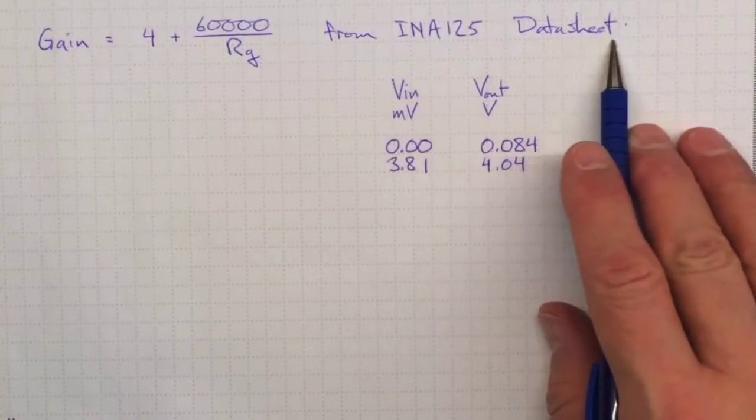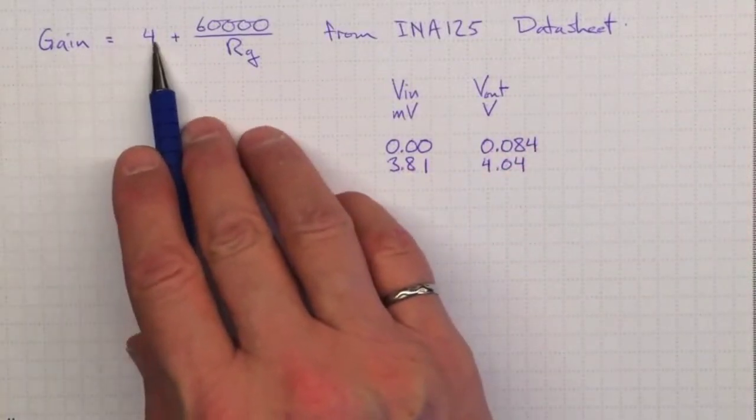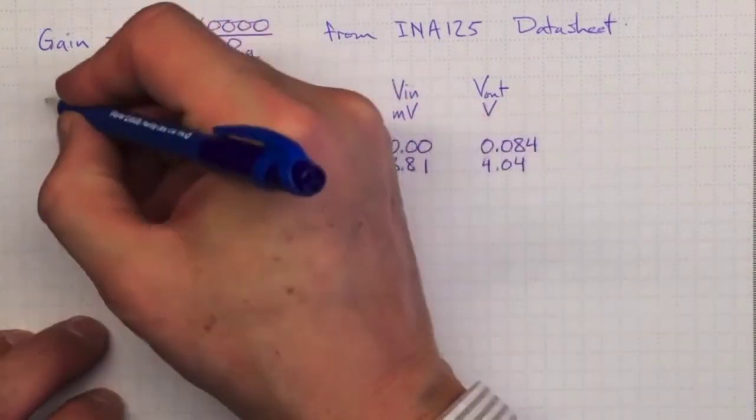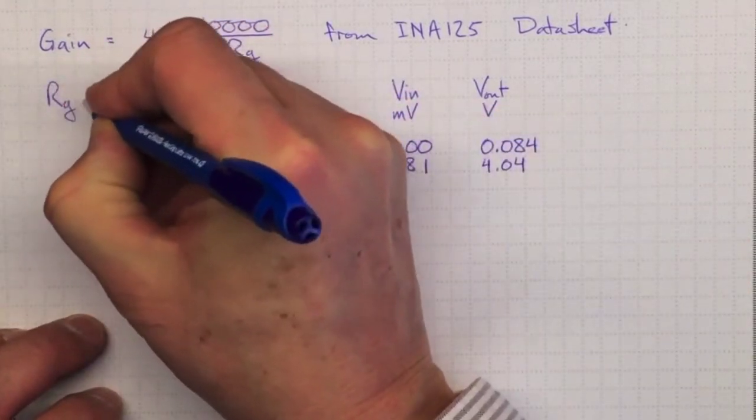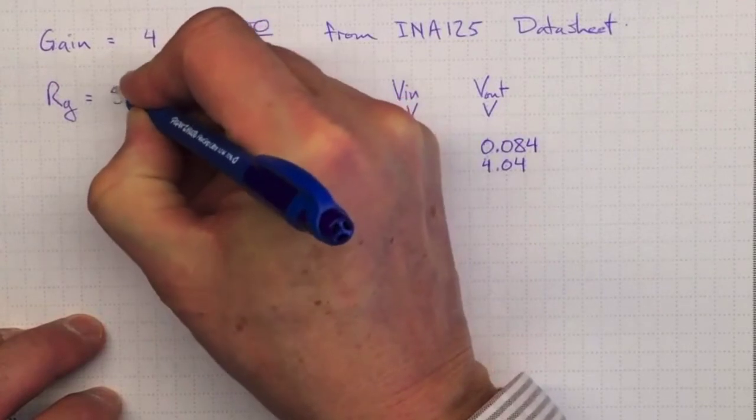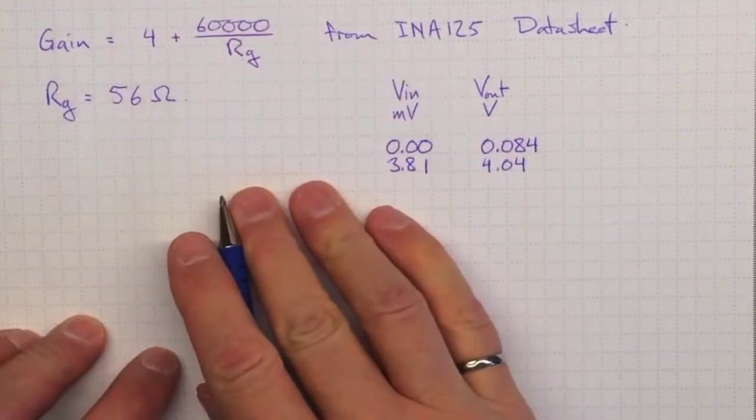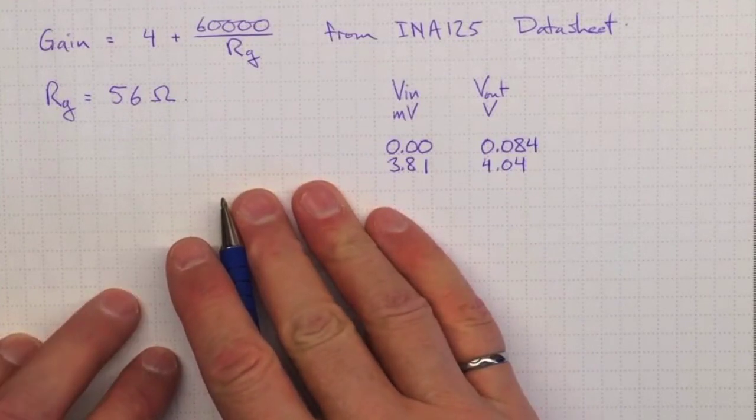From the data sheet, we expect that the gain will be following this formula here, determined by the gain resistor that we've used. And we chose a gain resistor of 56 ohms. I didn't talk much about why we chose it, I just chose it so it would be a fairly large gain, so that we could see something happening.